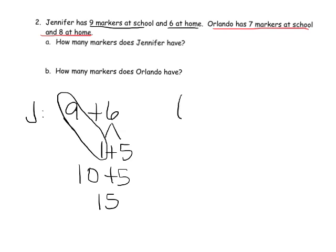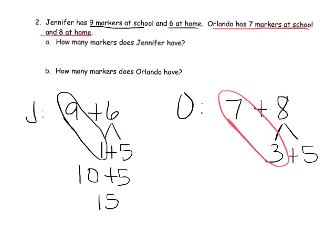And let's do Orlando. Orlando has 7 markers and 8 markers. Now I know that's 7. In order to turn it into a 10, I need a 3. So I'm going to take the 8 and break it up into 3 plus 5. And so that gives us right here, there's our 10. So that gives us 10 plus 5. And that's 15.